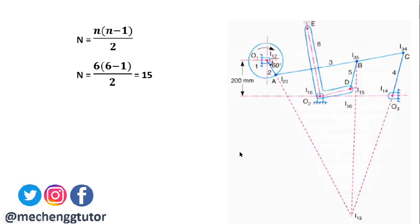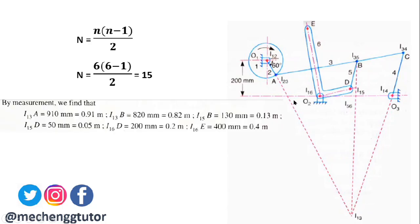We sketch the mechanism and locate all instantaneous centers. Some important measurements are required: I13 to point A (I13A), I13 to point B (I13B), I15 to point D (I15D), I16 to point D (I16D), and I16 to point E (I16E). Upon measuring, we get all these distances in mm and convert them to meters for simplification.